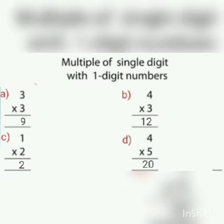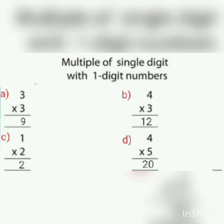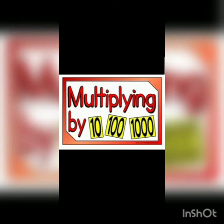Here are some examples. A: 3 multiplied by 3 — three 3s are 9. B: 4 multiplied by 3 — three 4s are 12. C: 2 multiplied by 1, which equals 2. And the last one, D: 4 multiplied by 5 — five 4s are 20. Here 20 is the product of 4 and 5.